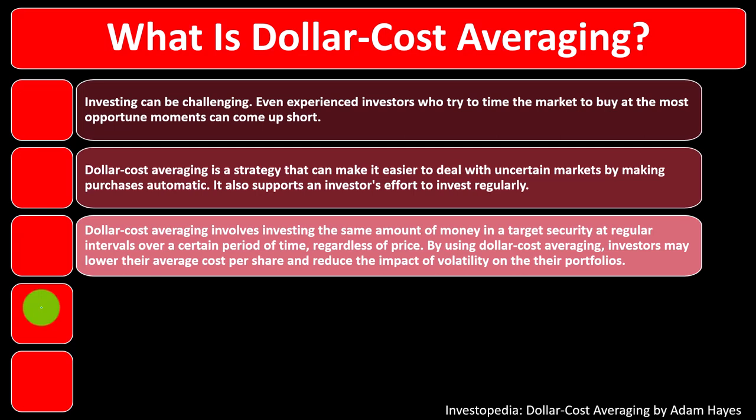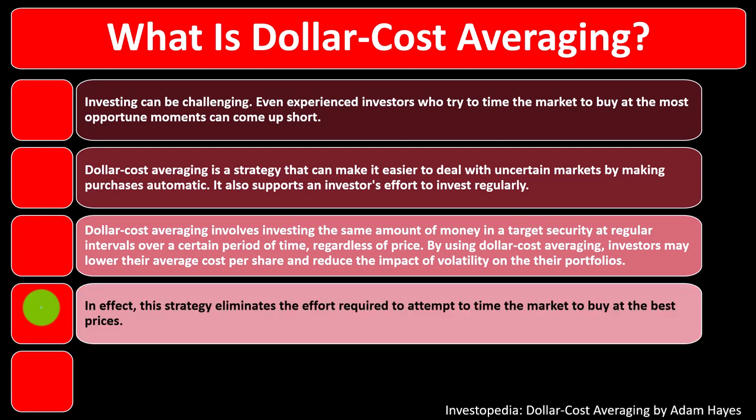Dollar cost averaging involves investing the same amount of money in a target security at regular intervals over a certain period of time, regardless of price. By using dollar cost averaging, investors may lower their average cost per share and reduce the impact of volatility — the fluctuation in stocks — on their portfolio. In effect, this strategy eliminates the effort required to attempt to time the market to buy at the best prices.